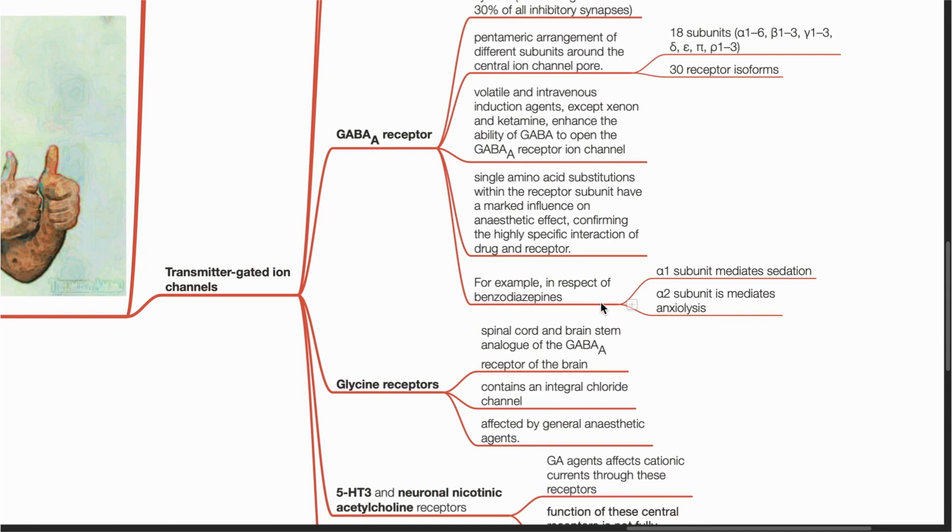For example, in respect of benzodiazepines, the alpha-1 subunit mediates sedation, while the alpha-2 subunit mediates anxiolysis.